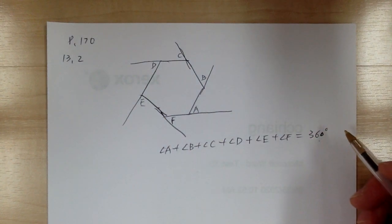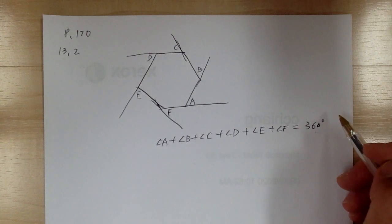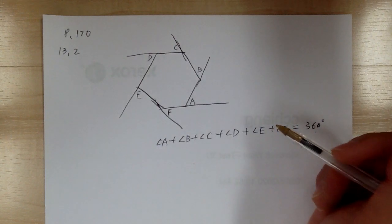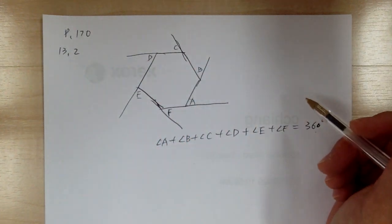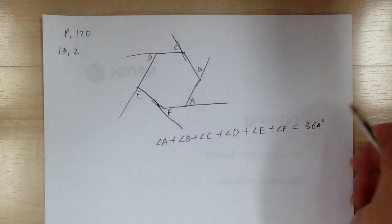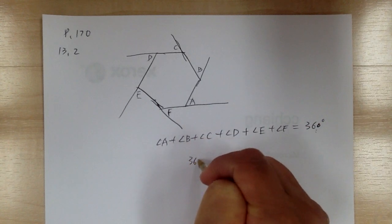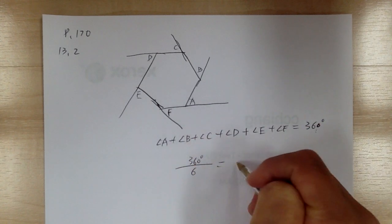But most of the time you're going to deal with regular polygons. If you have a regular polygon, to figure out each angle, you just divide by the number of angles. So in this case, if it's a hexagon, you use 360 divided by 6, so each of these would equal 60 degrees.